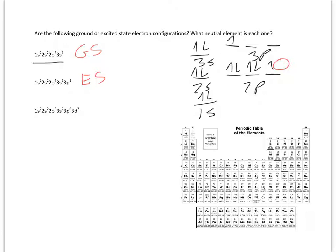By the way, how do you figure out what element this is? Well, if this ends in 3s1, this is going to be sodium because it ends in 3s1.